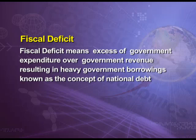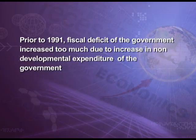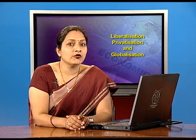All these policies continued for decades, but it was noticed as early as the 1980s that there were many shortcomings which the Indian economy was suffering from. For example, fiscal deficit — fiscal deficit means excess of government expenditure over government revenue resulting in heavy government borrowings, known as the concept of national debt. Prior to 1991, the fiscal deficit of the government increased too much due to increase in non-developmental expenditure. Because of this, the Indian economy was in a debt trap.